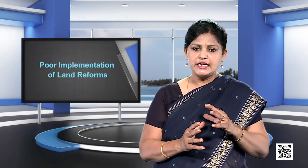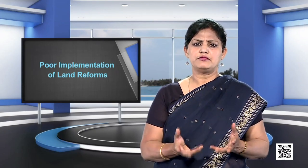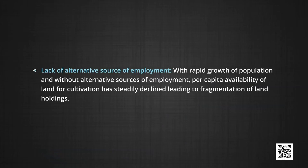The third cause is poor implementation of land reforms. After independence, the government tried to implement land reforms and redistribute land to those who had none. This move was successful only to a limited extent. A large section of agricultural workers was not able to farm these small holdings, as they did not have the money or skills to make the land productive, and the land holdings were too small to be viable. Fourth is lack of alternative sources of employment. A large section of the rural poor are small farmers whose land is less fertile and dependent on monsoons. With rapid population growth and without alternative sources of employment, per capita availability of land for cultivation has steadily declined, leading to fragmentation of land holdings.